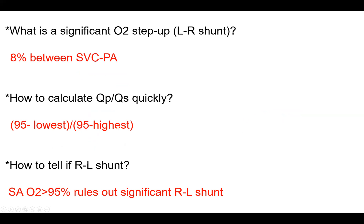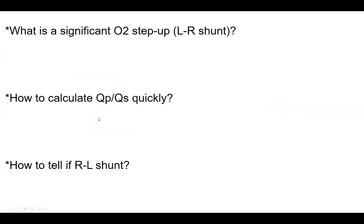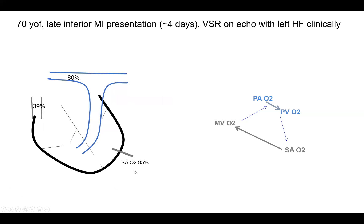Those are the three simple steps in assessing any shunt. The key calculation to know: 95 minus the mixed venous O2 (SVC O2), divided by 95 minus PaO2.